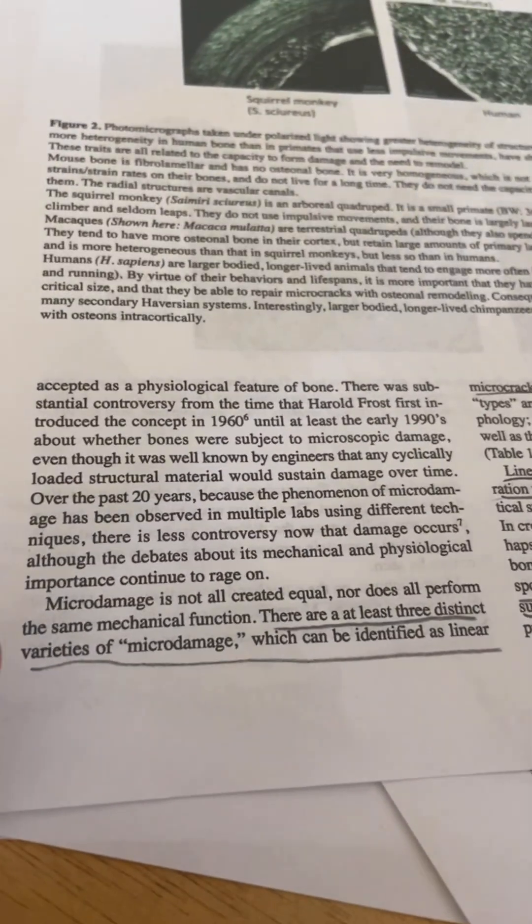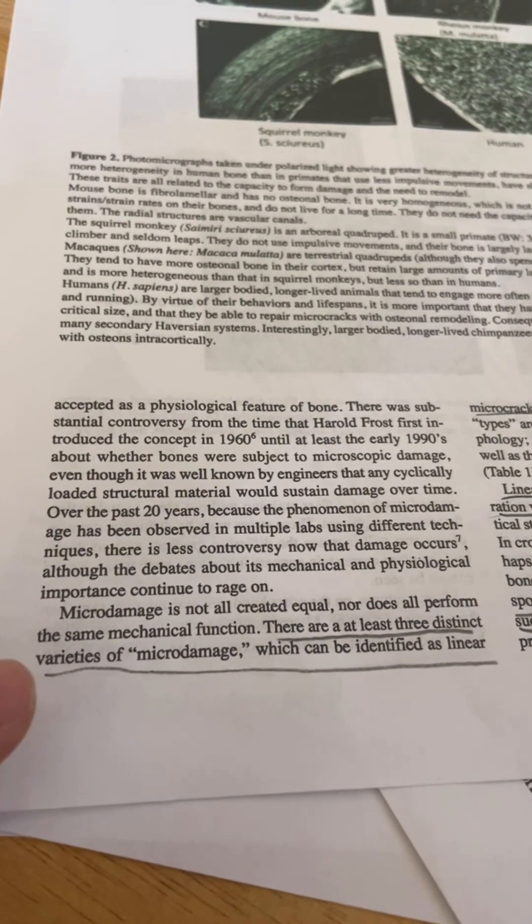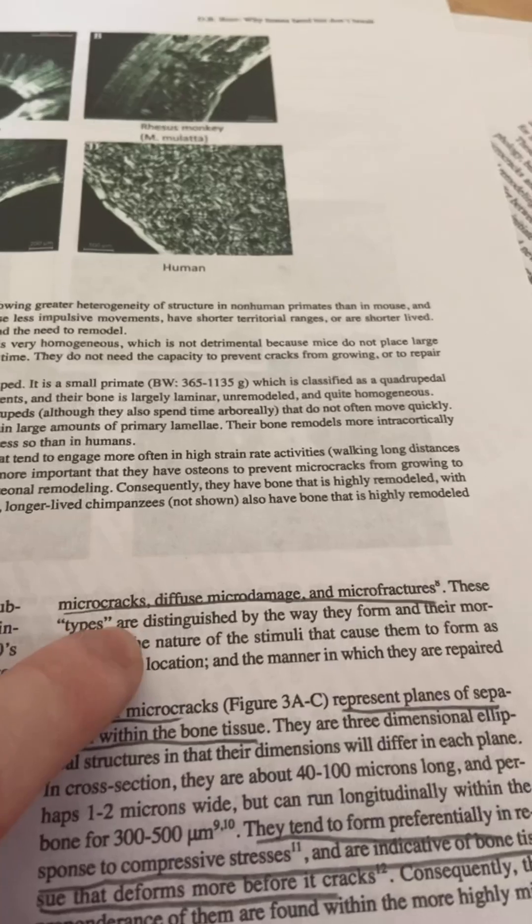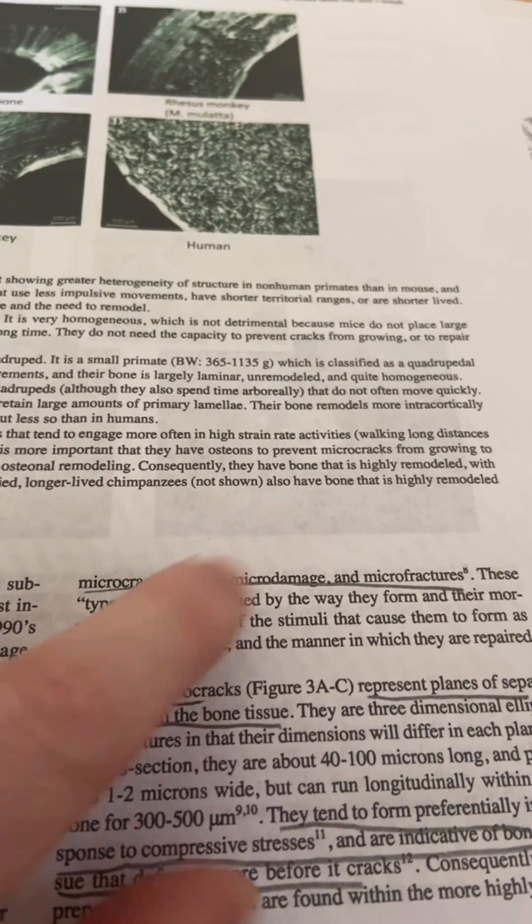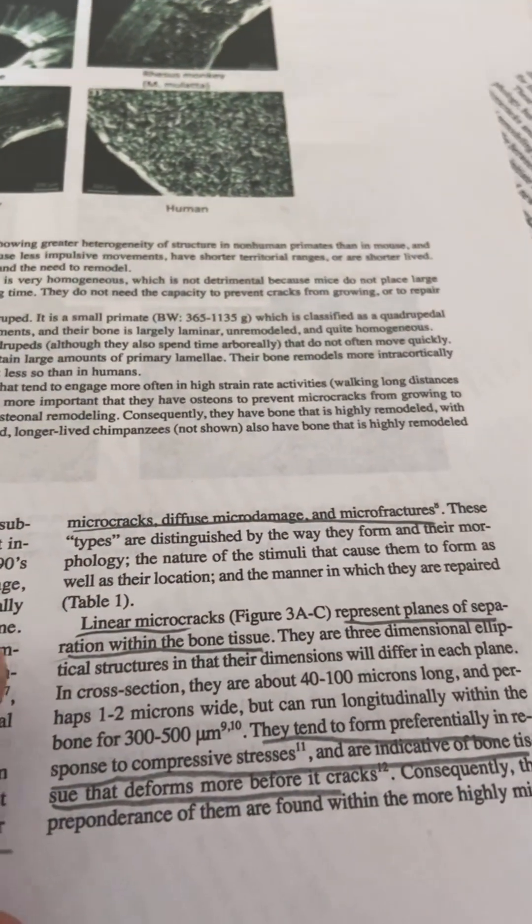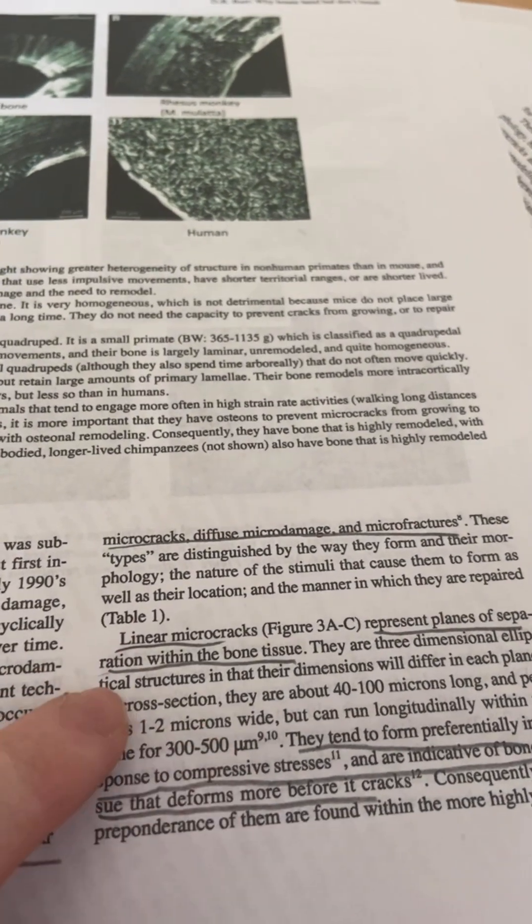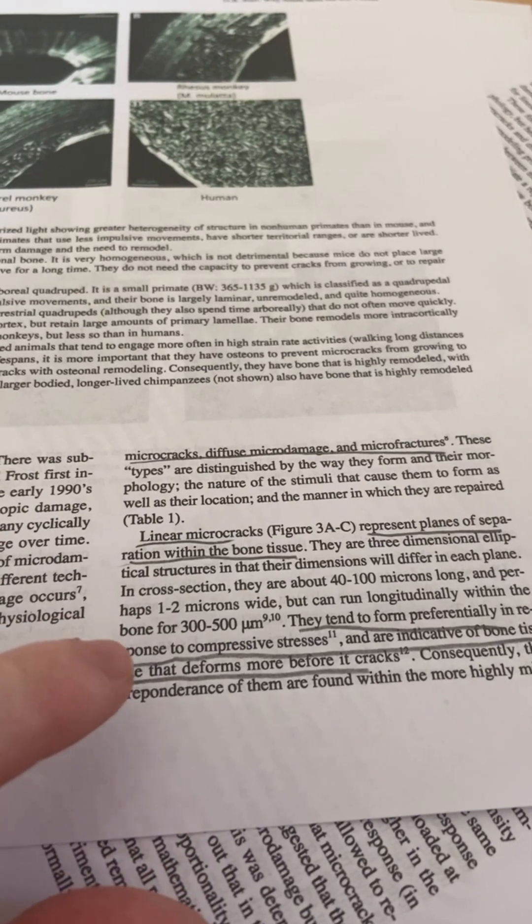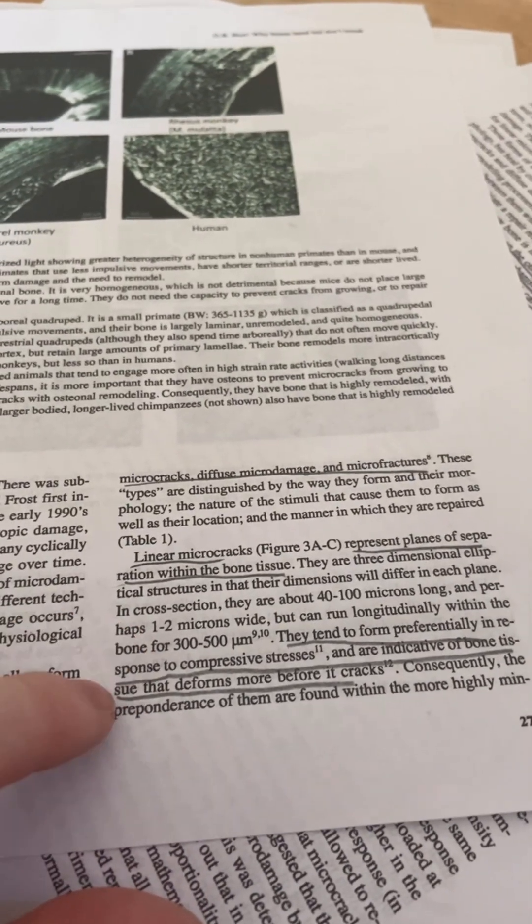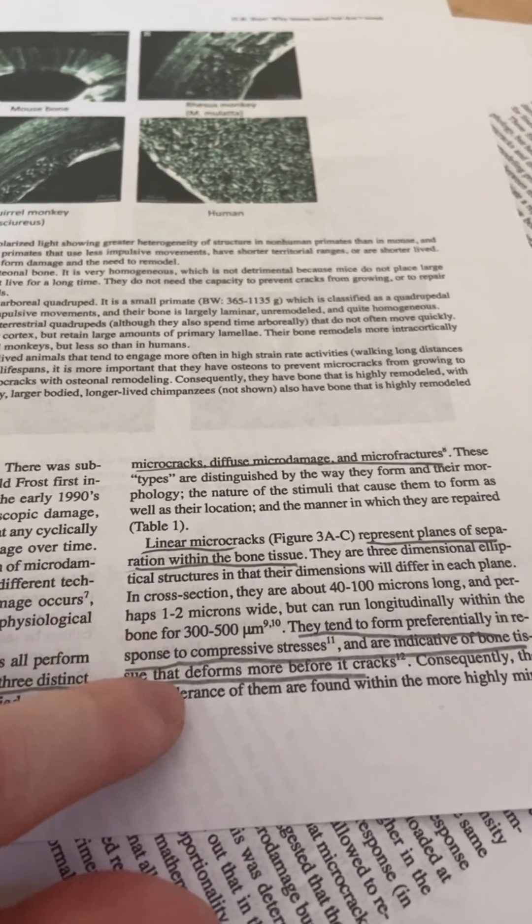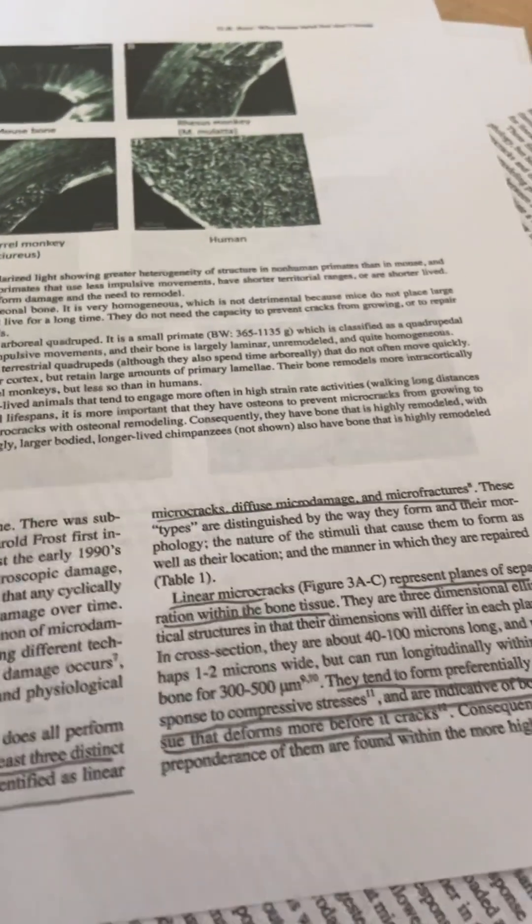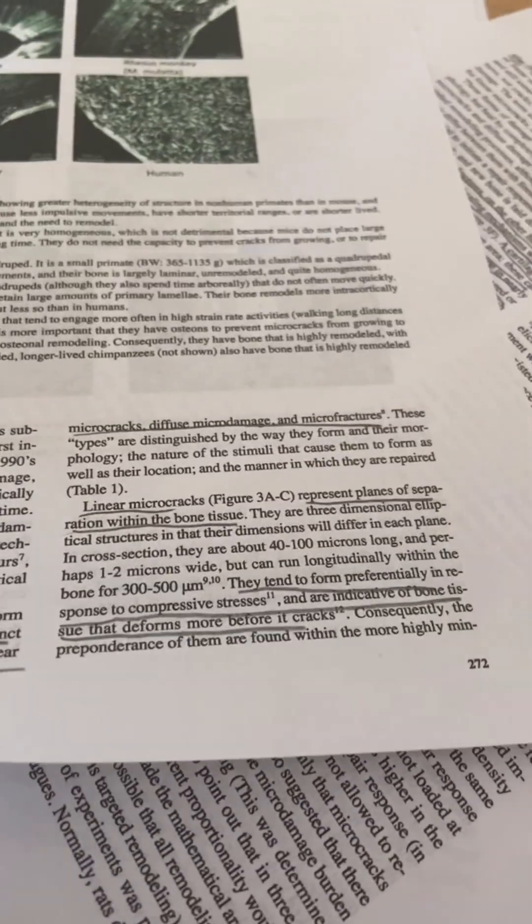Here, David Burr explains the different types of microdamage. There are at least three distinct types: linear microcracks, diffuse microdamage, and microfractures. Linear microcracks represent planes of separation within the bone tissue. They tend to form preferentially in response to compressive stress, and they're indicative of bone tissue that deforms more before cracks - plastic deformation. The issue is getting that plastic deformation in the cortical bone.